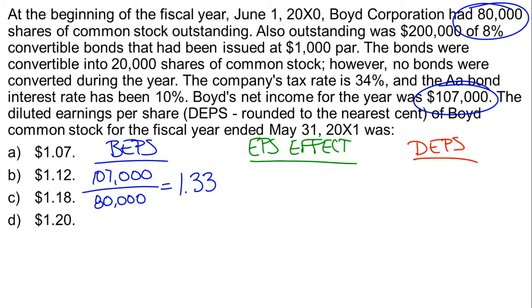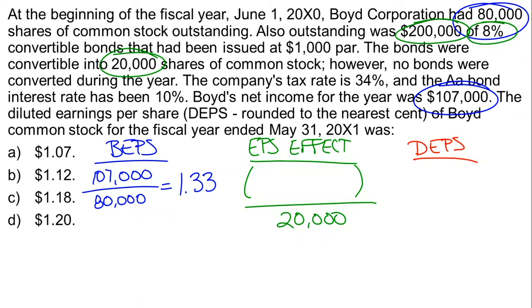To calculate the EPS effect of the bond, we need to know how much interest they wouldn't pay if the bond had been converted, and the tax implications of that. If they didn't pay interest, their income would have been higher, meaning more taxes. We also need to know how many shares the bond converts into — 20,000 shares. The bond was $200,000 at 8% interest, so there is $16,000 of interest they would not be paying.